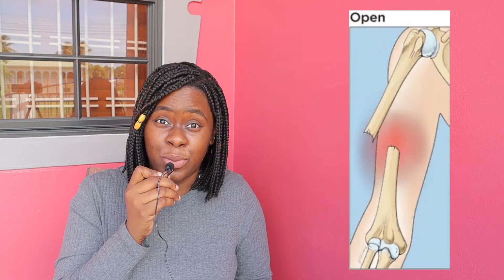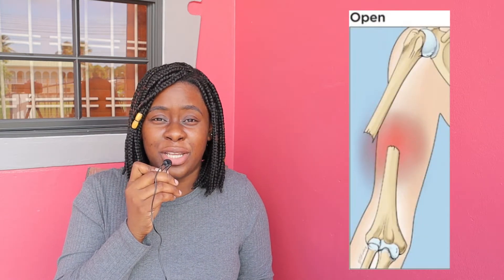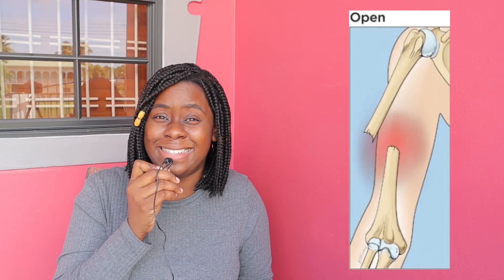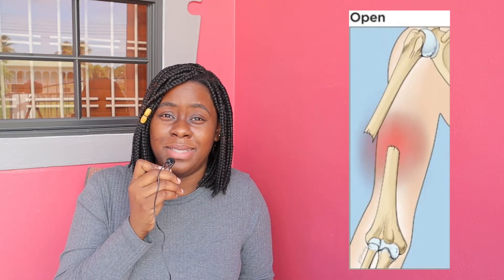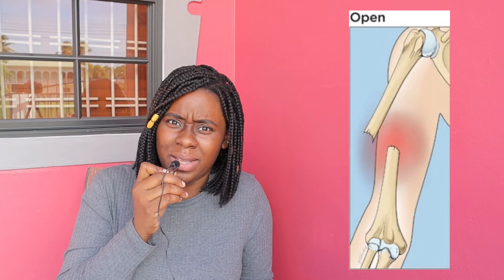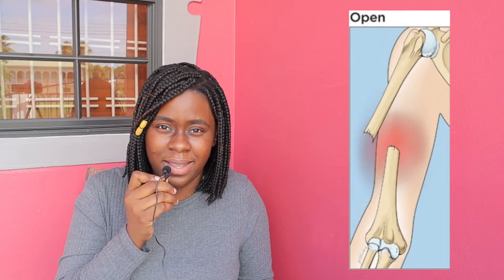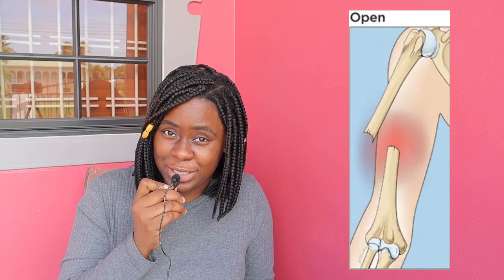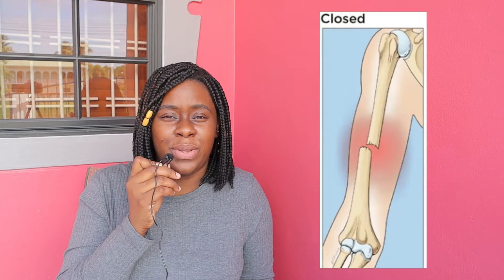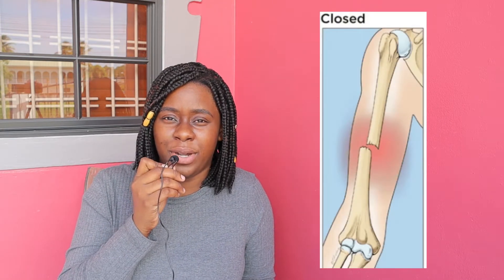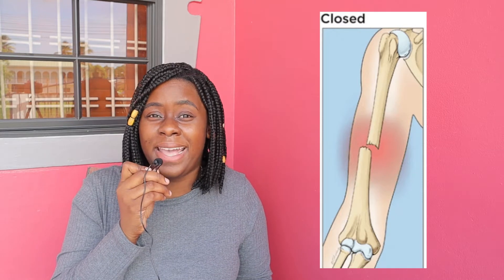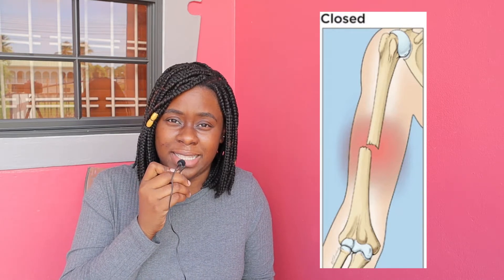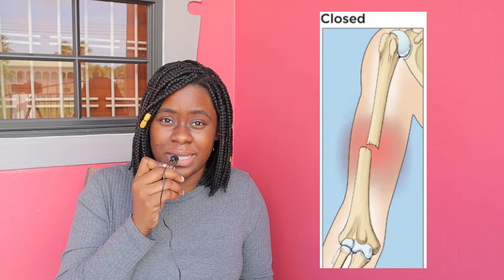With an open fracture, the bone actually breaks and opens the skin, so we may be able to see the bone sticking out. With a closed fracture, we know it is broken, but the bone has not pierced the soft tissue, so we can't see the bone projecting through the outermost layer of the skin.